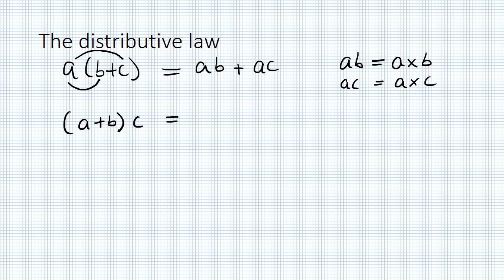First we want to look at recapping the distributive law. A couple of forms we'll look at here. First one is A times (B + C), we expand that out to get A times B plus A times C. The other form is (A + B) times C equals AC plus BC.